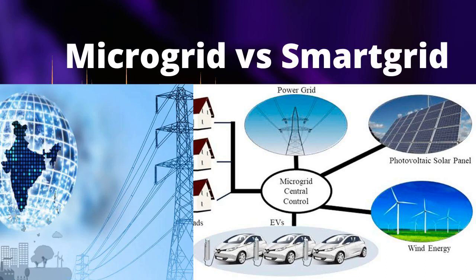Definition. Microgrid: a microgrid is a small-scale, localized energy system that can operate independently or in conjunction with the main grid. It typically includes distributed energy resources (DERs), such as solar panels, wind turbines, energy storage, and backup generators to supply power to a specific area or facility.